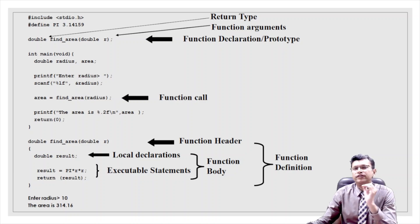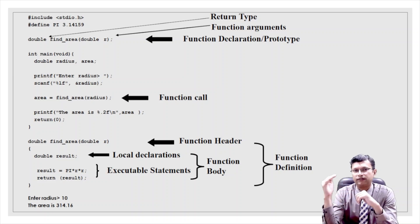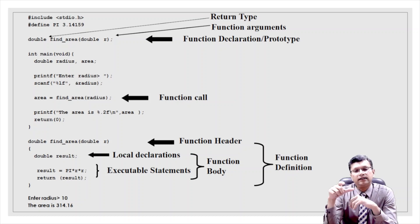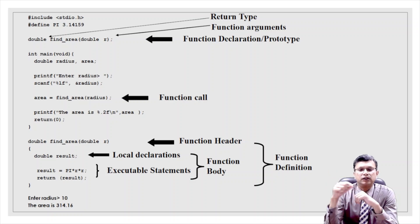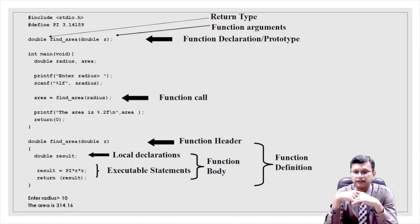For a quick revision, here is a code example. Just after the `#define` for pi, we have the function declaration, also called the function prototype. Then we have the main function. Inside the main function, there is a function call: `area = findArea(radius)`, where we pass the value of radius.